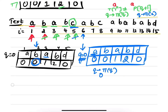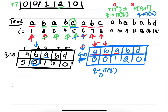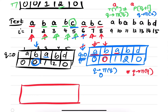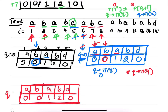In the next iteration, check whether this A is matching with this A — yes, it's matching, so increment q and increment i. Then check whether this B is matching with this B — yes, increment q, increment i. Is this C matching with this A? No, it's not matching. Therefore, convert q to pi of q, that is 0, so q comes back to 0. Check again: is C matching with A? No. Pi of q is 0 and q is 0.